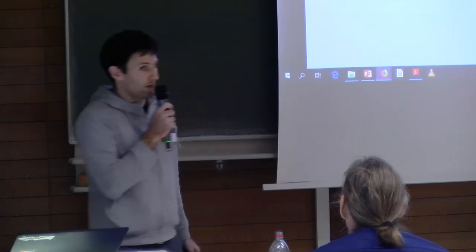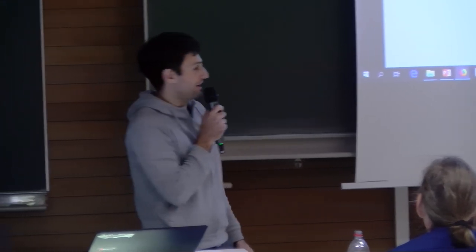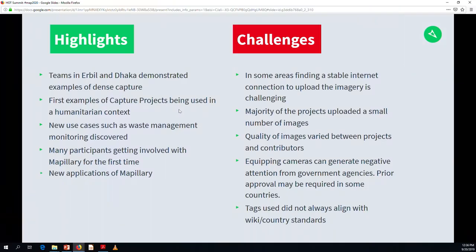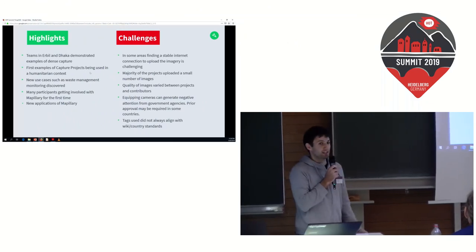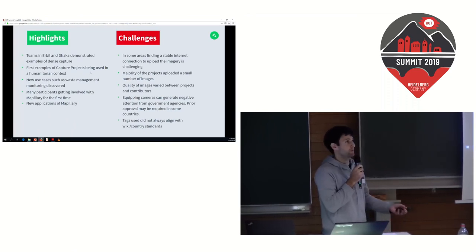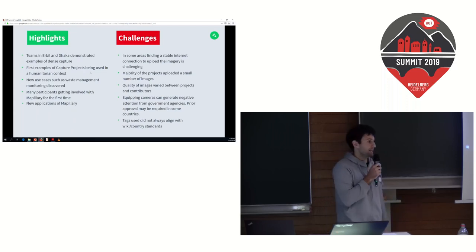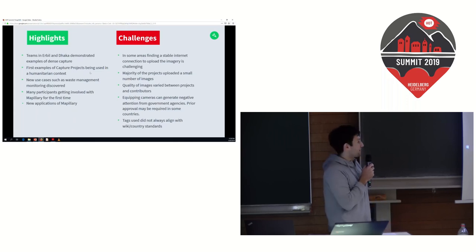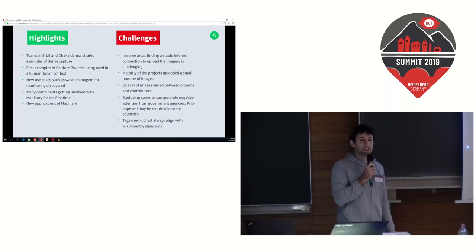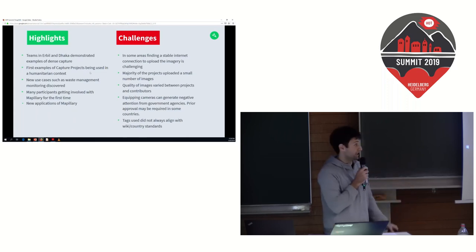The list of challenges might look bigger than the highlights, but it was definitely a positive campaign overall. Challenge number one: in some areas it's hard to find internet connection. You would have heard all the challenges with low upload speeds and how that influences the time it takes to upload imagery. Number two, the majority of projects only uploaded a small number of images. Of the 35 or so projects that signed up, only a small fraction uploaded a substantial number of images, due in large part to the connectivity issue.